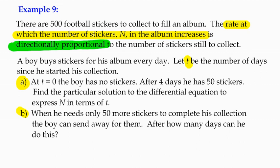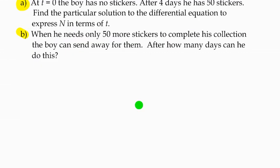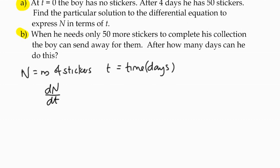But there's a thing that might not be familiar to all of you. We're told that it's directly proportional to the number of stickers still to collect. So let's have a look at that part of the work. We're told that n is the number of stickers and t is the time in days. The rate of change dn by dt is directly proportional to the number of stickers he's got left to collect, which would be 500 minus n. That's how many he's got left because we know there's 500 stickers to collect.